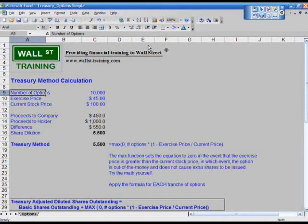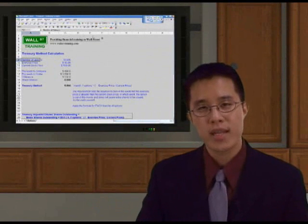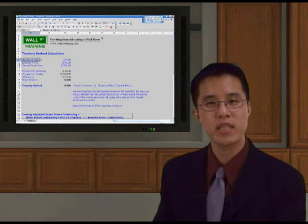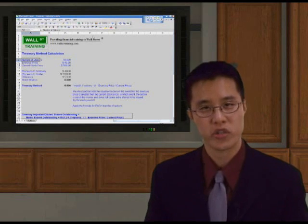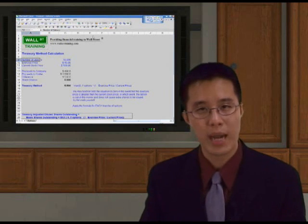Treasury method diluted shares outstanding. Here's how you calculate diluted shares outstanding using the Treasury method. The reason this is called the Treasury method is because this assumes that the company would use Treasury stock, which is basically shares that they have repurchased, and they will issue that in lieu of cash for the option value.